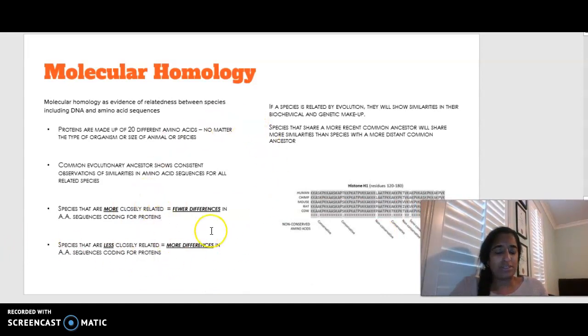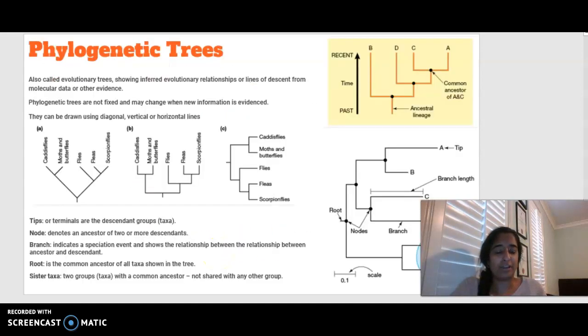We can then use this information based on how much DNA they have in common to then form our phylogenetic trees. So phylogenetic trees or evolutionary trees are basically diagrams that are showing the evolutionary relationship or descendants from molecular data or using evidence. So they are not fixed. They could change as more evidence sort of comes into light in the future.